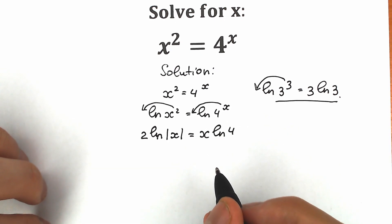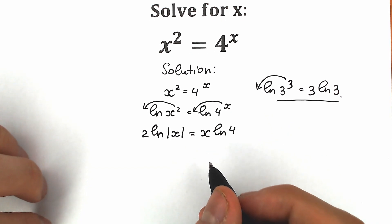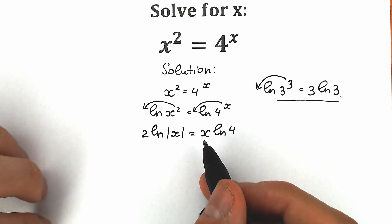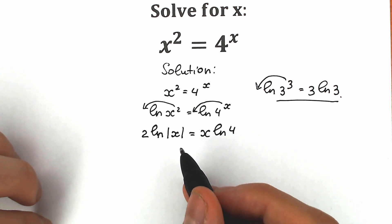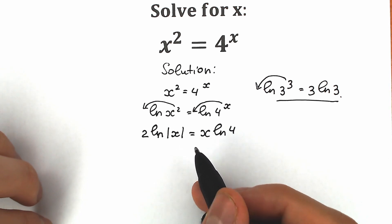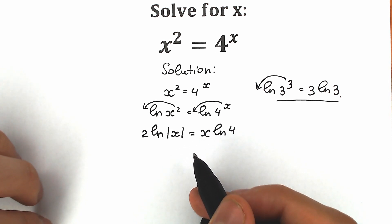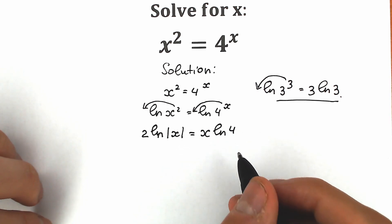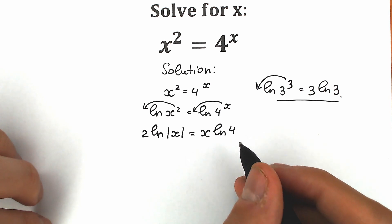Right now let's try to group our variables on the left side and our constants on the right side. Let's divide both sides by 2.